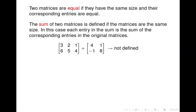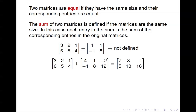Here's an example where the sum cannot be computed because these matrices are not the same size. And here's one where we can compute the sum. Notice the 7 here is just 3 plus 4. To get the 3, it's 2 plus 1, and so forth. To get the ijth entry, you sum the corresponding ijth entries in the two original matrices.